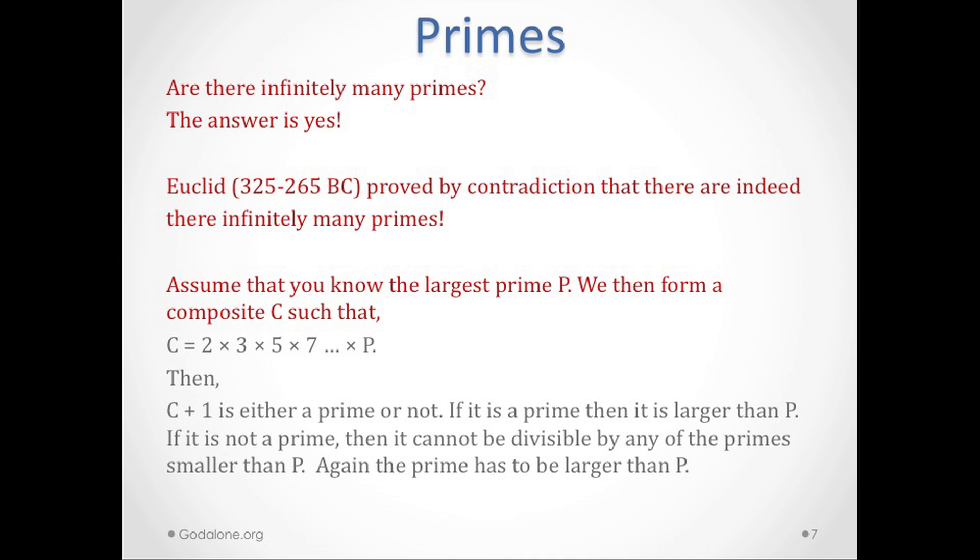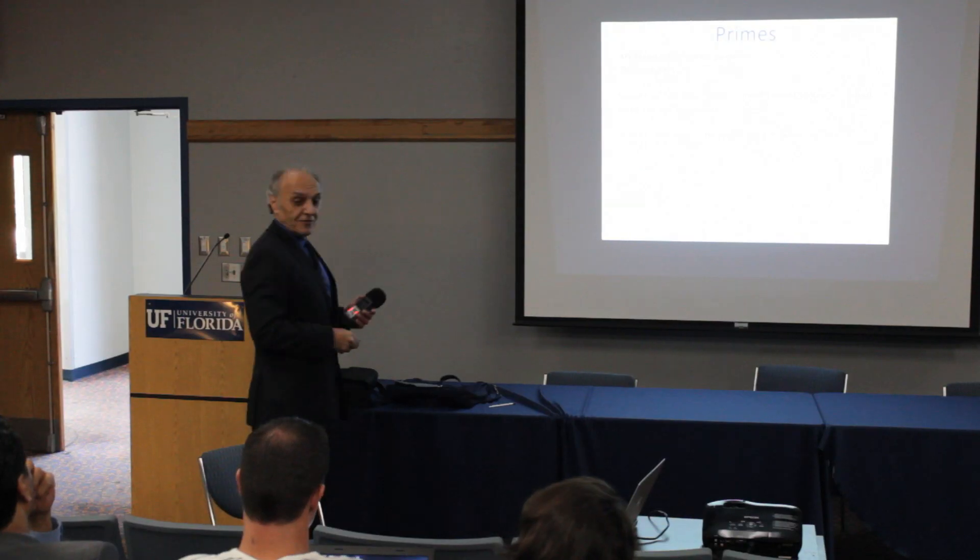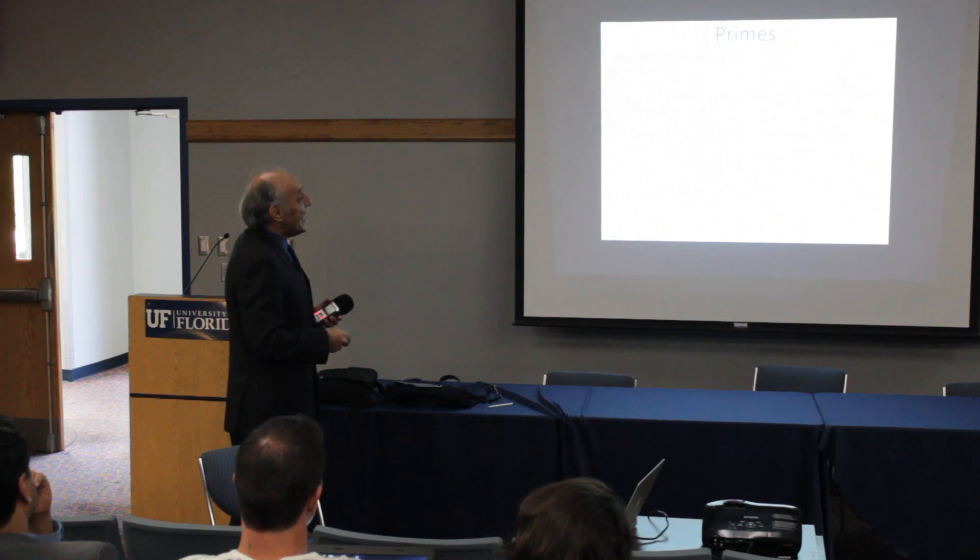If it is a prime, then it's obvious it's larger than p. So you can find always a number larger than p if this is a prime. If it is not a prime, then it cannot be divisible by any of these primes because we added one to it already. This is a beautiful proof. So again, that number has to be larger than p. That's how the proof goes.